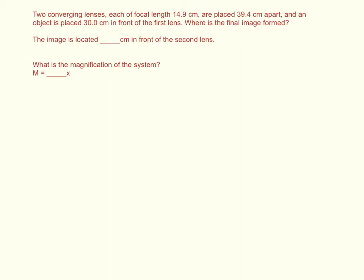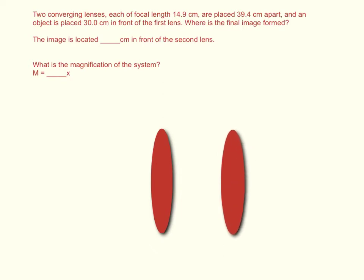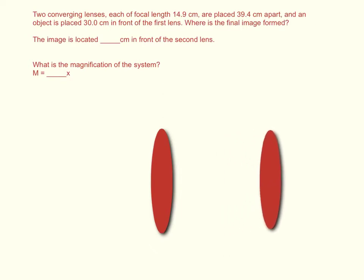So in this case we have two converging lenses. I'm going to go ahead and draw some lenses — my first lens and then my second lens. We have an object right here in front of the first lens. It's 30 cm, so we'll call this distance P1. This is the position of the first object.